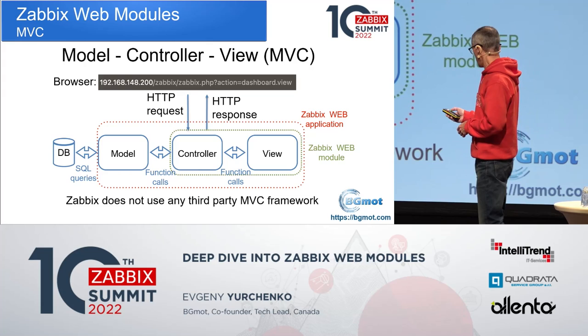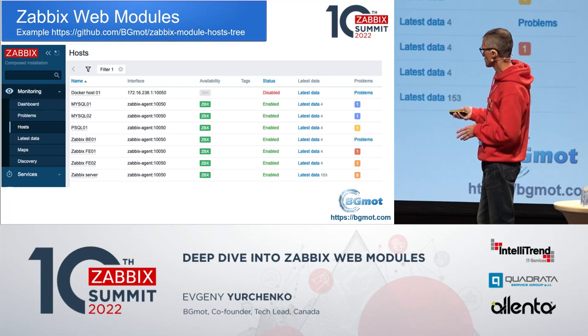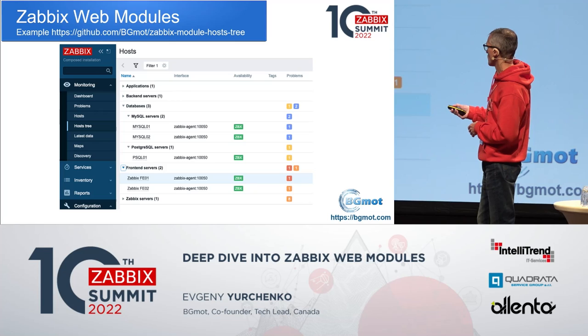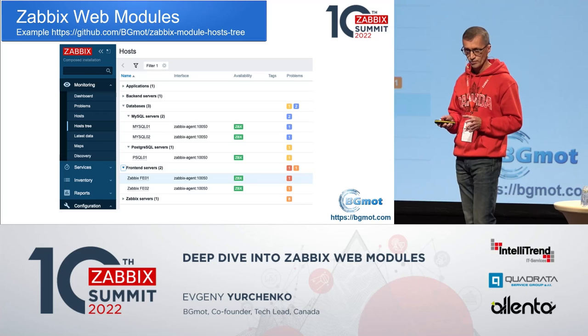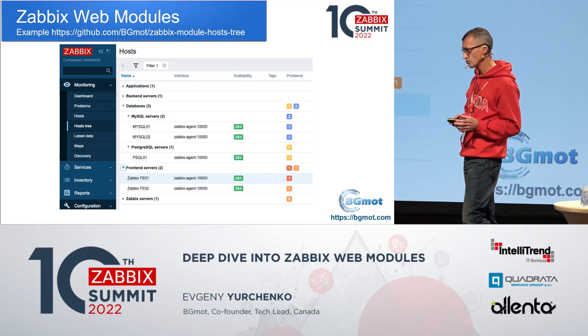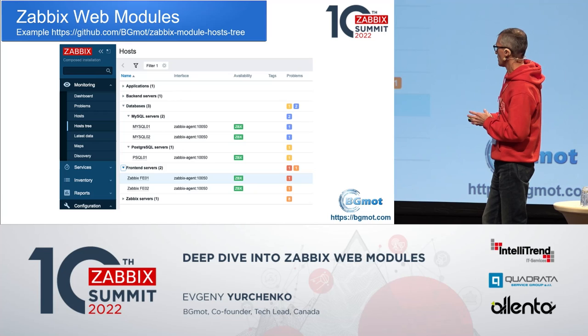For this demo and presentation, I picked one of my modules called host stream, and I slightly modified how you see the list of hosts configured in your Zabbix instance. This is the default — you basically see a list of hosts, nothing special. When you enable my module, you will see a new picture. First of all, you see a new menu item: host tree. All your servers are organized by host group. Here you can see a tree of your groups and servers. You can collapse or expand any group — you see the hierarchy of your groups and the number of problems per group.